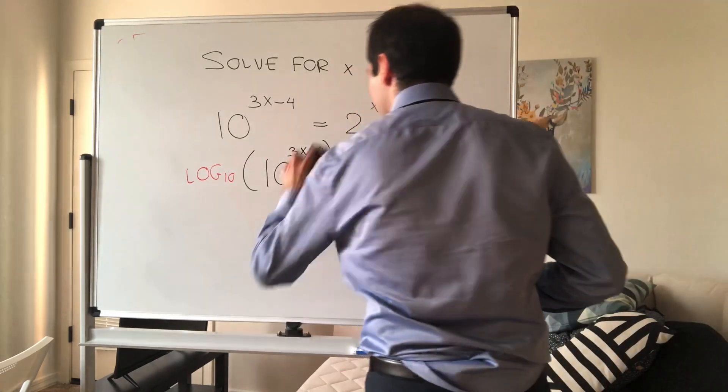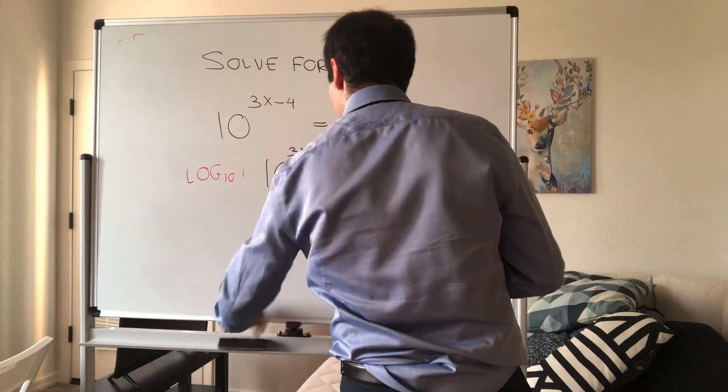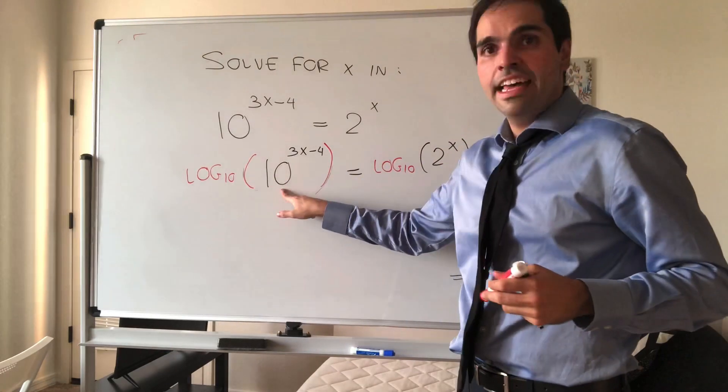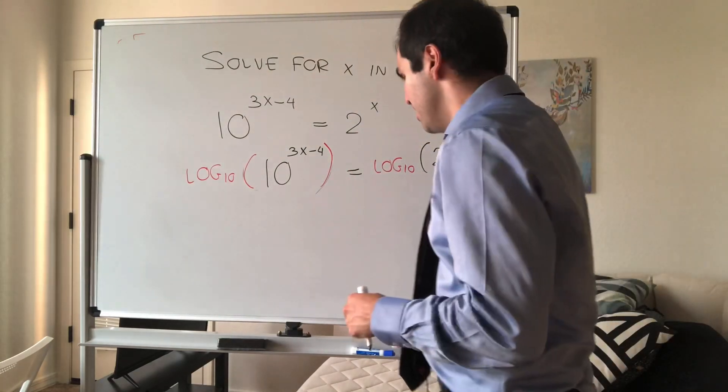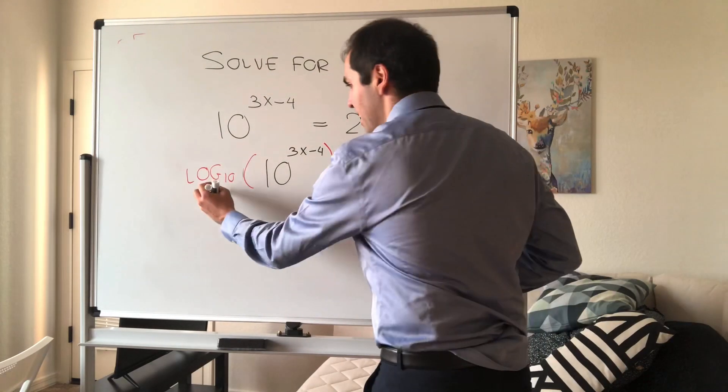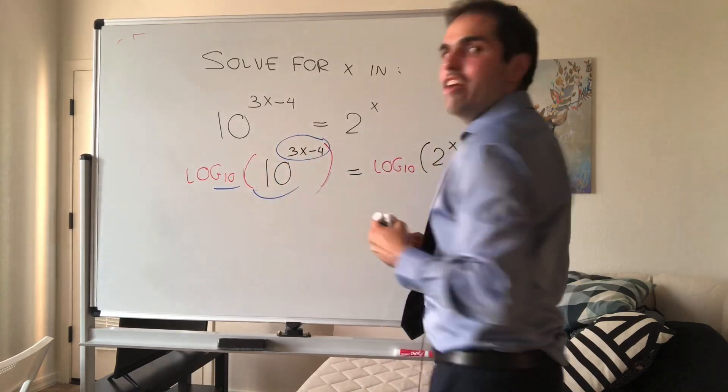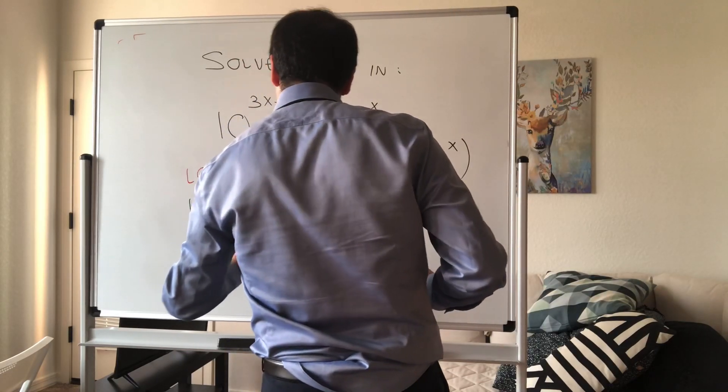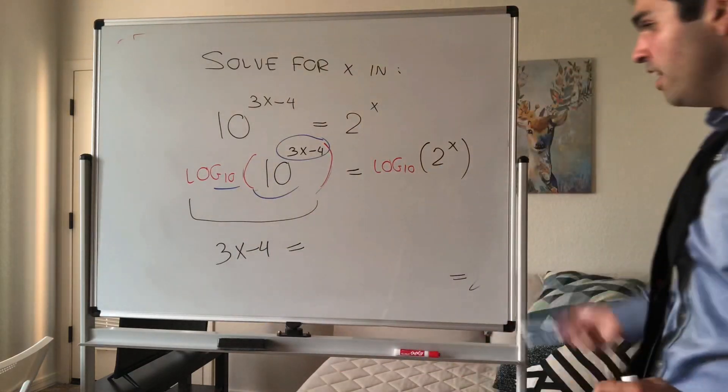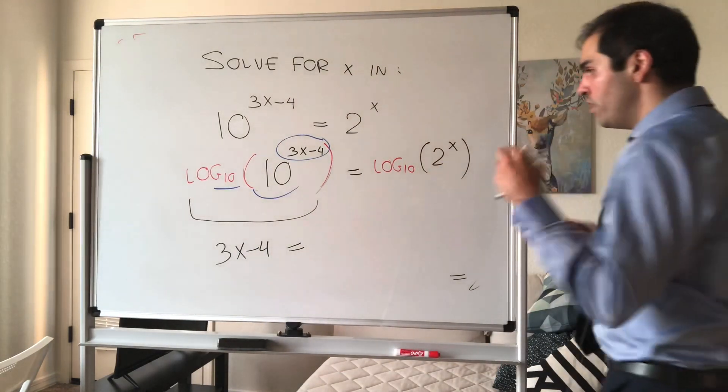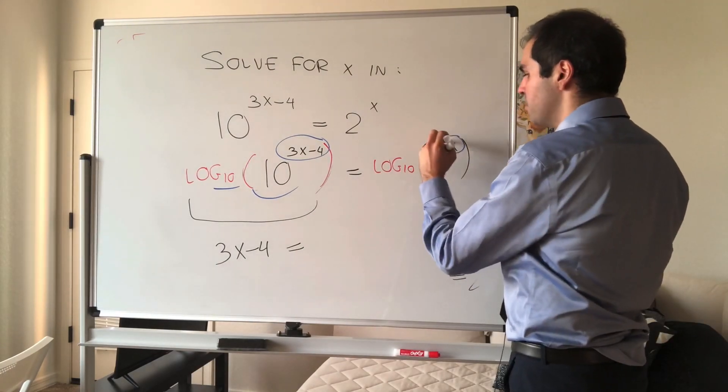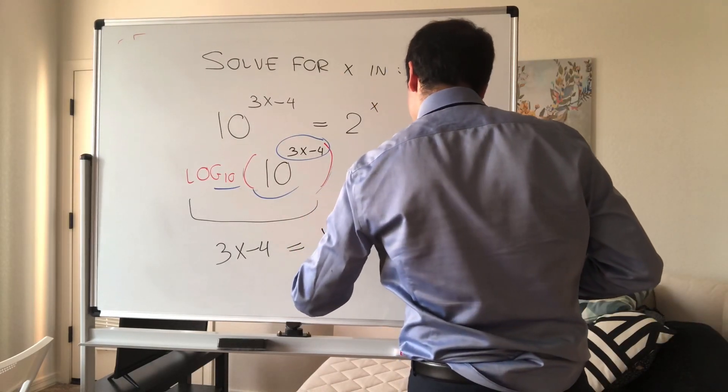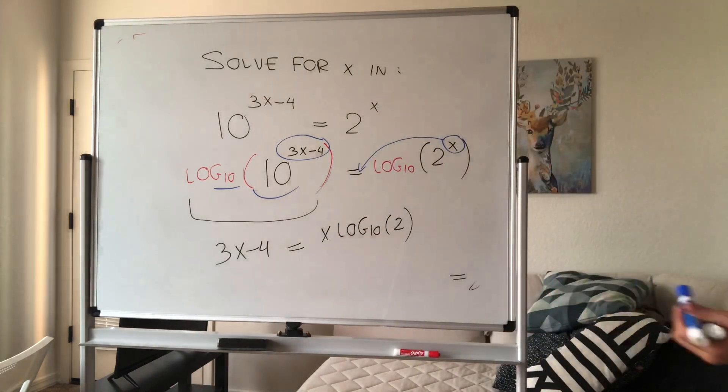And here let's illustrate again two nice properties. First of all, remember log base 10 undoes whatever 10 to the something does. So log base 10 of 10 to this thing is just whatever number you have here. So this whole thing simplifies to 3x minus 4. And to figure out this property, notice log destroys exponents. So this x comes here. We get x log base 10 of 2.